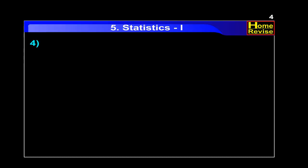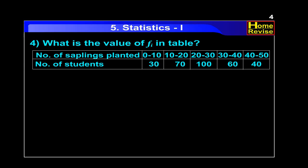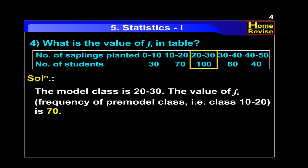Question number 4. What is the value of FI in the table? The modal class is 20 to 30. The value of FI, that is the frequency of the pre-modal class, which is class 10 to 20, is 70.